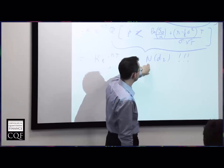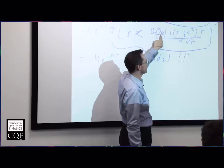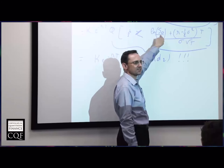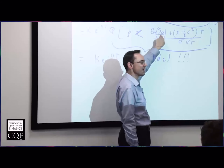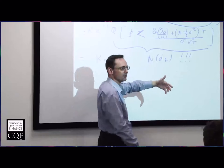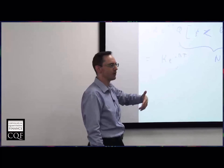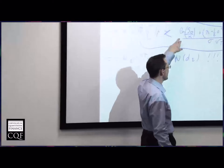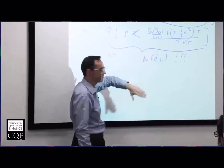It has to be a normal distribution because the log of S is normally distributed. S is log-normally distributed because it's a geometric Brownian motion. Therefore, the log of a geometric Brownian motion has to be Gaussian — and that's how we get the normal distribution. So it all comes from our assumptions.